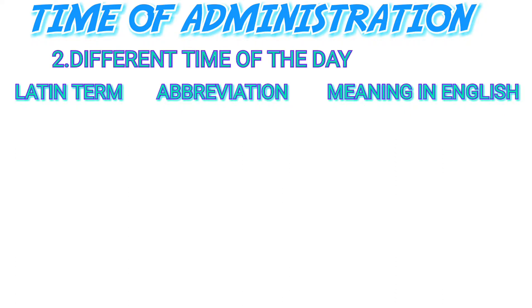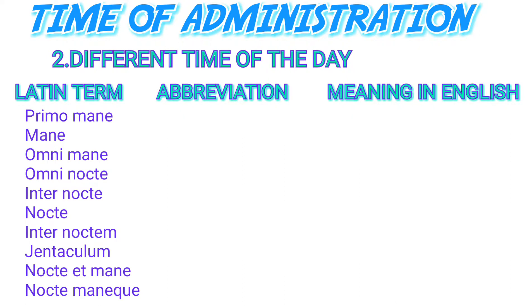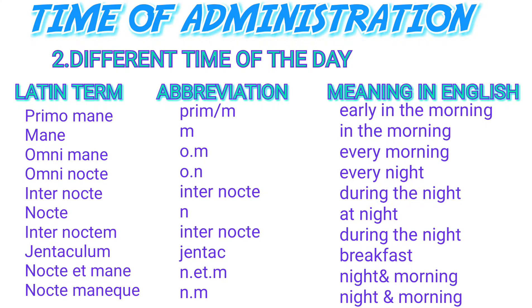The first Latin word is 'primo mane,' abbreviated as 'prim' or just 'M,' meaning early in the morning. 'Mane' means in the morning, abbreviated as M. 'Omni mane,' abbreviated OM, means every morning. 'Omni nocte,' abbreviated ON, means every night.